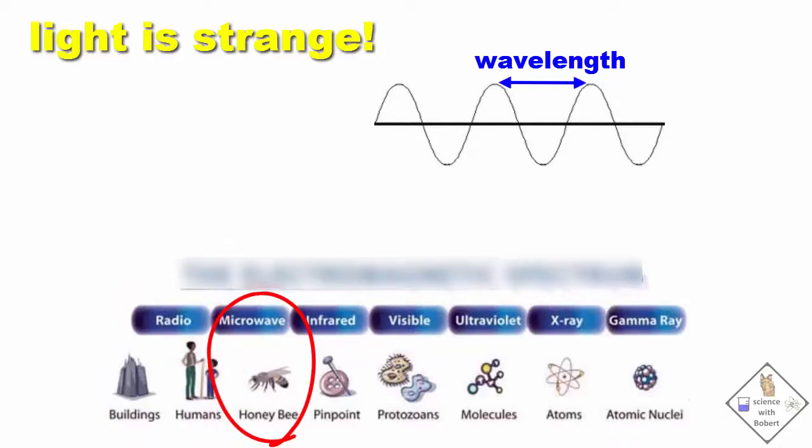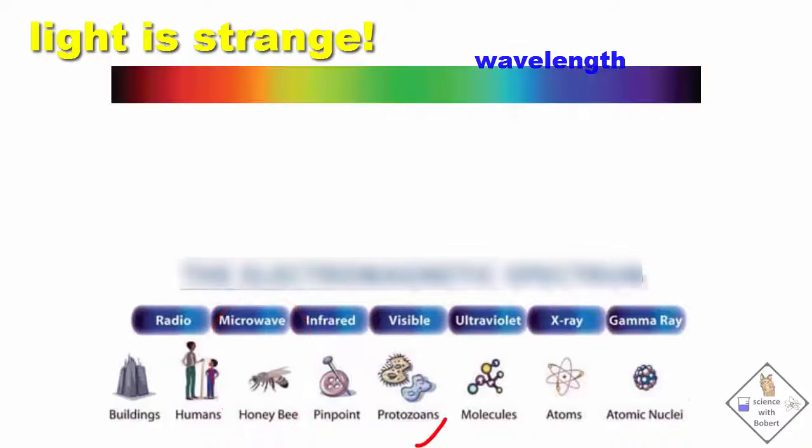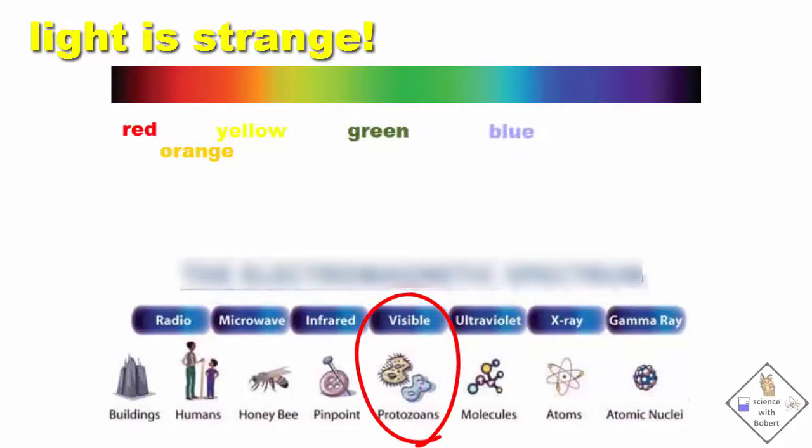Microwaves have a wavelength around the size of a honey bee. It is hard to believe, but the light that our eyes detect, the colors of the rainbow - red, orange, yellow, green, blue, indigo, violet - are roughly the wavelength that match the size of single-celled organisms, with red being the longest and violet the shortest.